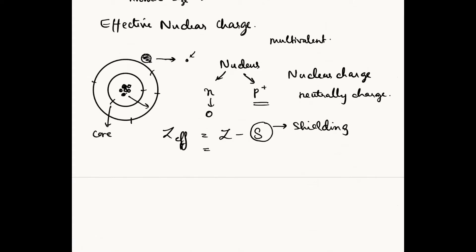Shielding is basically the obstruction of the charge that the nucleus has to attract the electron, due to the presence of the core electrons. These are our valence electrons, and we have something called the core electrons. These core electrons are blocking the force of the nucleus on the outer electrons, reducing the charge which they are effectively experiencing.